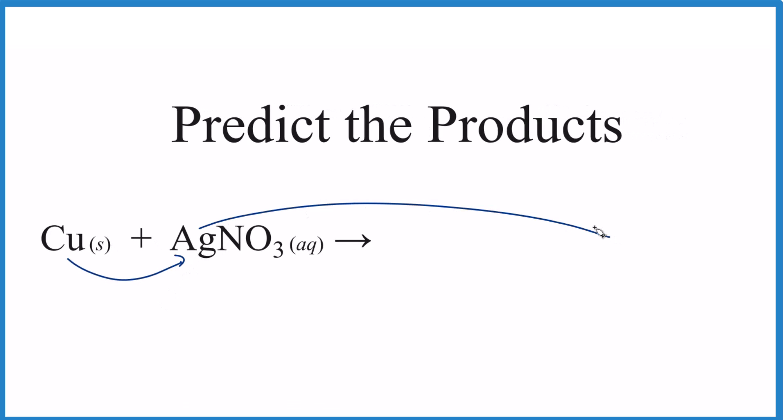The silver would be all by itself, Ag, and that would be a solid. Then the copper would be with the nitrate, we'd have CuNO3, but because this is an ionic compound we need to make sure the charge balances.